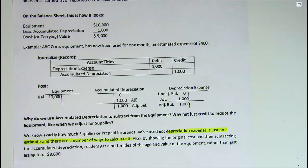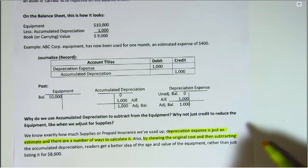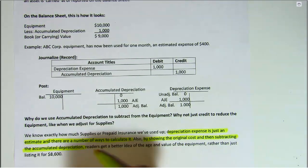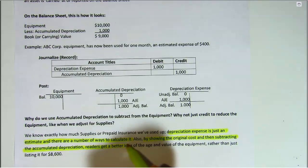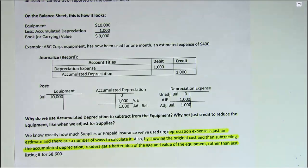What if we're wrong? We may have to extend the depreciation over a longer period or shorten the depreciation process if we're wrong. Also, by showing the original cost and subtracting the accumulated depreciation, readers get a better idea of the age and value of the equipment rather than just listing it at its reduced amount.